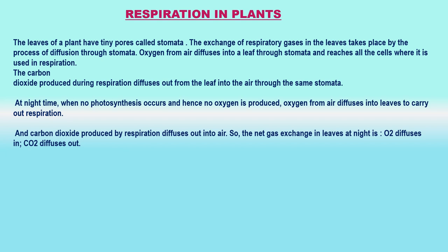During daytime, carbon dioxide produced by respiration is all used up in photosynthesis by leaves, and even more carbon dioxide is taken in from the air. Thus, the net gas exchange in leaves during daytime is: oxygen diffuses out and carbon dioxide diffuses in. At night, when no photosynthesis occurs and hence no oxygen is produced, oxygen from air diffuses into leaves to carry out respiration, and carbon dioxide produced by respiration diffuses out into the air. So the net gas exchange in leaves at night is: oxygen diffuses in and carbon dioxide diffuses out.